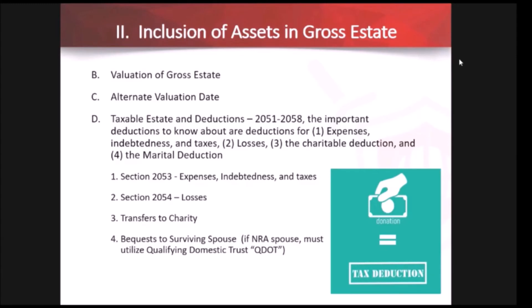The estate tax return is Form 706; the gift tax form is Form 709. Along with the gross values and exemption amounts, before you arrive at the taxable estate you also have certain deductions — similar to an income tax return — that you're able to utilize to reduce the overall value of the estate.